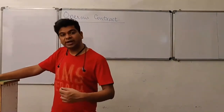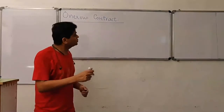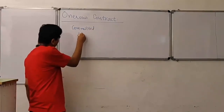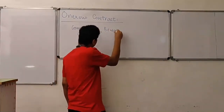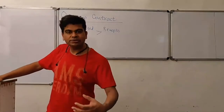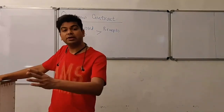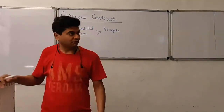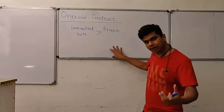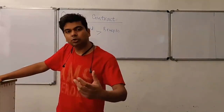An onerous contract is a contract where your committed costs exceed the benefits. Whenever you are executing a contract, you will be incurring certain expenses. The reason we incur these expenses is because we are confident that the revenue we are going to earn will be more than the committed cost, and ultimately the contract will result in a gain for us. We execute a contract because we see profit potential in it.